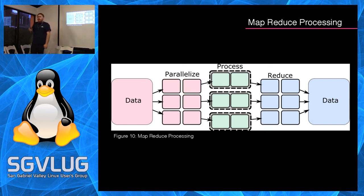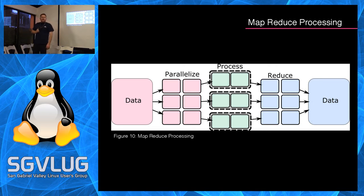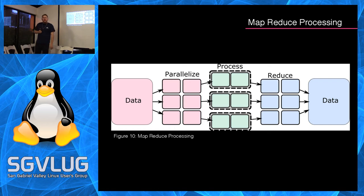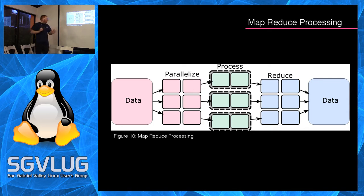Hadoop had one problem: it was based on disk I/O. Every calculation required reading in the data, calculating, then writing back out to disk. No matter how fast your disks and cache, that's still slow compared to memory, where all reading and writing happens in RAM. RAM is inherently faster. That was the brilliance behind Apache Spark's MapReduce technique: keep everything in memory and just write backups to disk, so all processing is in memory with the speed and efficiency of RAM, distributed across the system just like MapReduce distributes across disks.